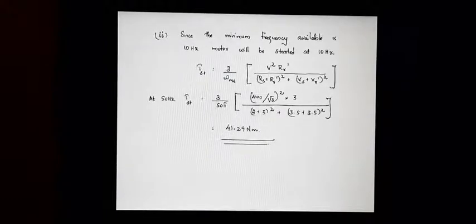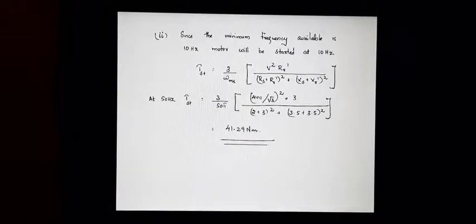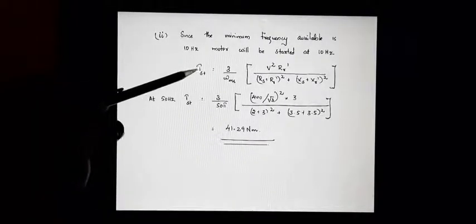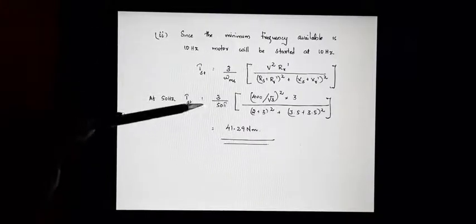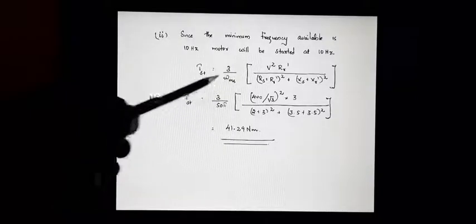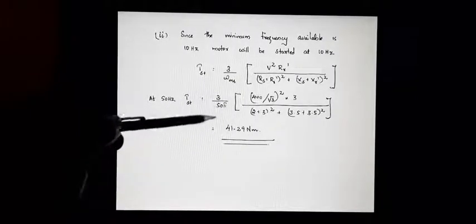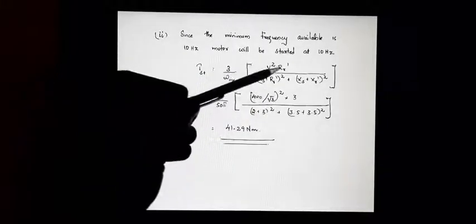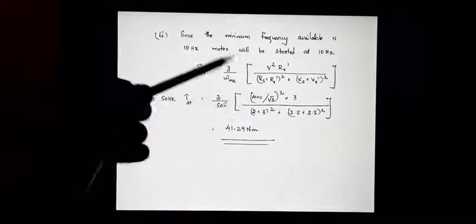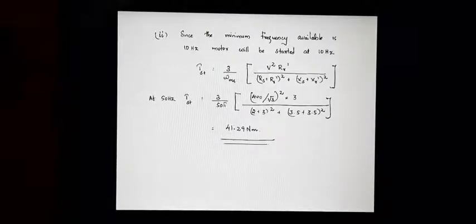Substituting slip s = 1 gives the starting torque relation. To find starting torque at 50 Hz, we substitute ωms = 50π, V = 400/√3, and all given circuit parameters (Rr', etc.) into the relation. This gives a starting torque at 50 Hz of 41.29 N·m.